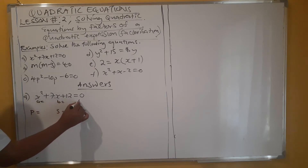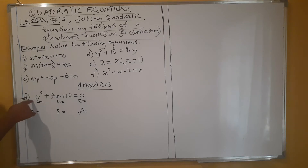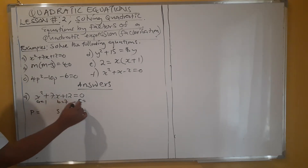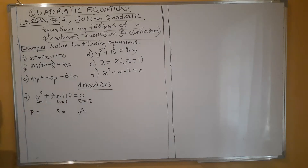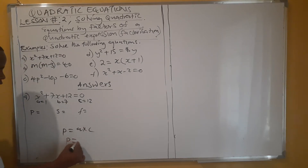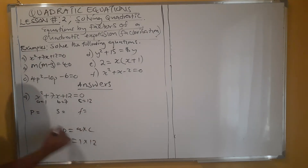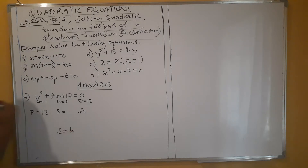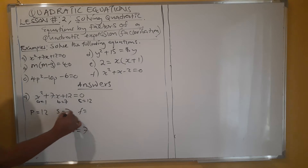Now, a is the coefficient of the term with power two. Our coefficient here is 1 — if you can't see anything, there's a 1; if there's a negative, it means negative 1. Our b is 7 and our c is 12. The product is equal to a times c, so our product is 1 × 12 = 12. The sum is equal to b, and our b is 7, so our sum is 7.